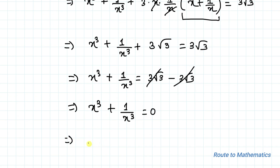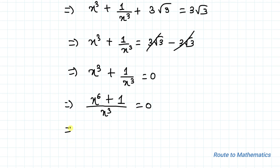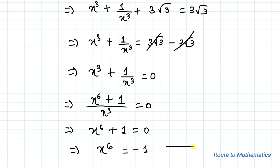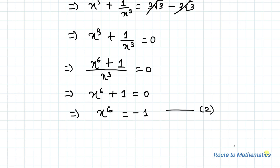Now taking LCM here, we have x cube times (x to the power 6 plus 1) equals to 0. Now by cross multiplication, we have x to the power 6 plus 1 equals to 0, which implies x to the power 6 equals to minus 1. Let's take this as equation 2.